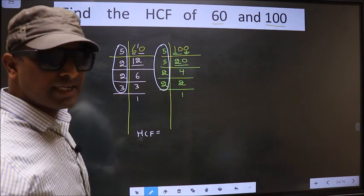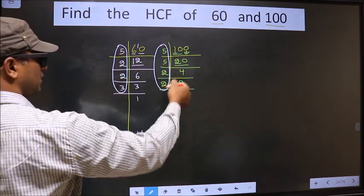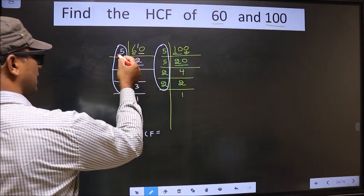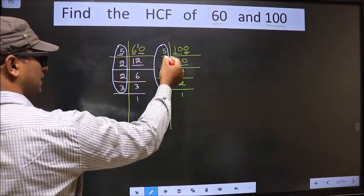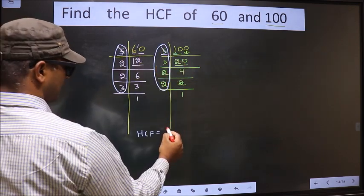So now, let us find the numbers which are present here and also here. Starting with the number 5, do we have 5 here? Yes, so you cut 5 right here.